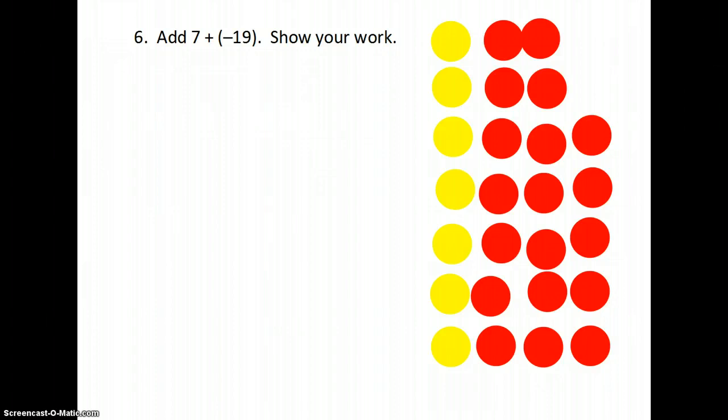And the goal with this is to make 0 pairs, right? So the goal is every time you cross out a negative one, you cross out a positive one. So there's that. Those are gone. Those equal 0. So I crossed off 1, 2, 3, 4, 5, 6, 7 positives, and 1, 2, 3, 4, 5, 6, 7 negatives.